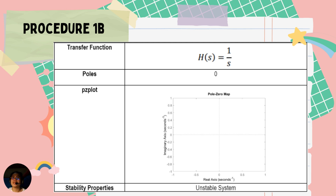For procedure 1b, we are given the transfer function H(s) = 1/s, and a pole at the origin or 0. For the PZ plot, the pole is located at 0, making it an unstable system.